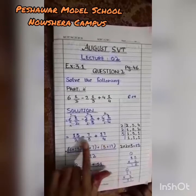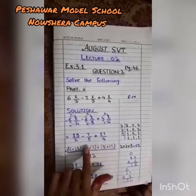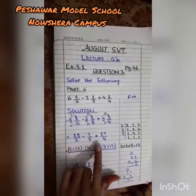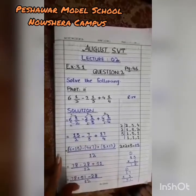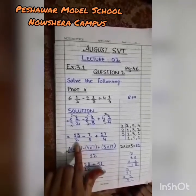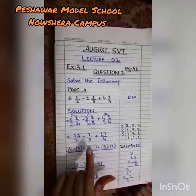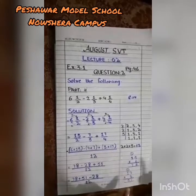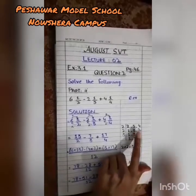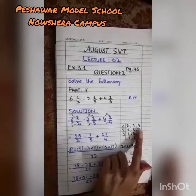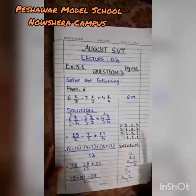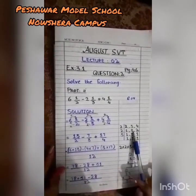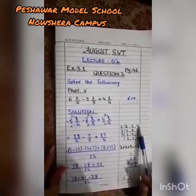These are unlike fractions because the denominators of both fractions are different. So we need to find one equivalent denominator. We will find the LCM. We find the LCM of 2, 3, and 4 — the denominators — using a factor table.